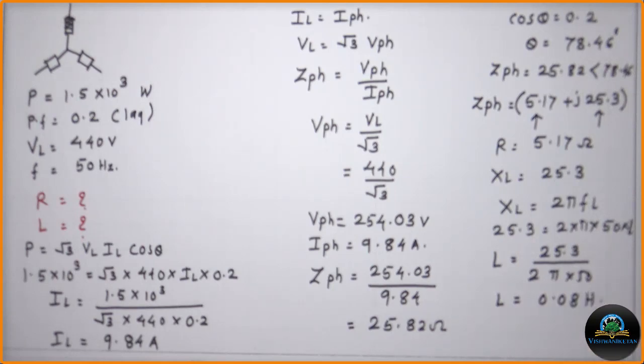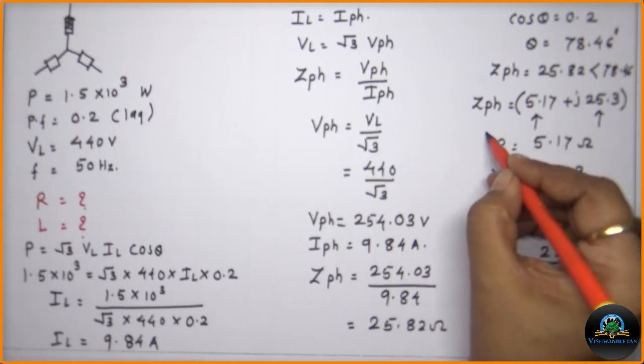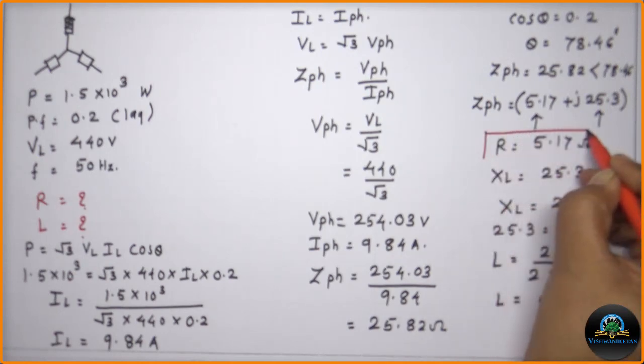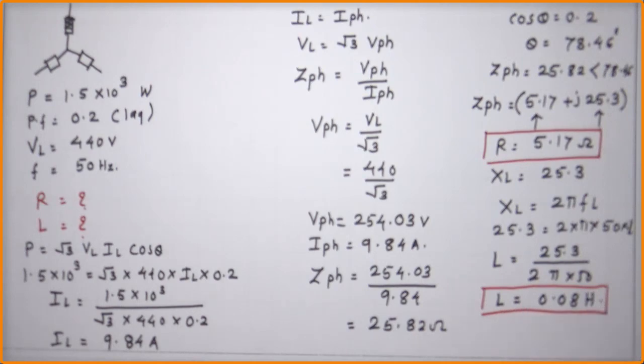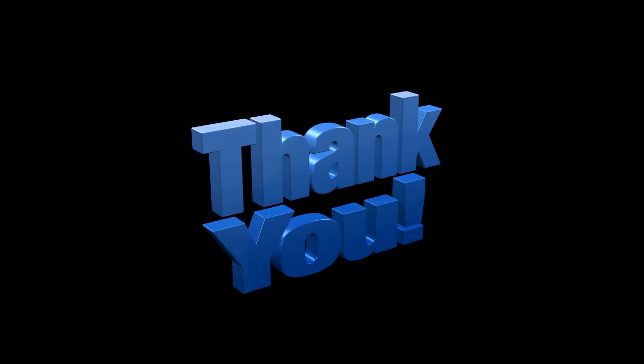So finally, we have the answers with us that the value of resistance is 5.17 ohms and the value of inductance is 0.08 Henry. Thank you very much.